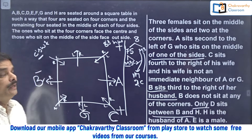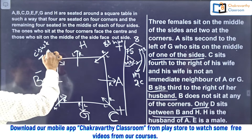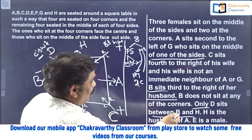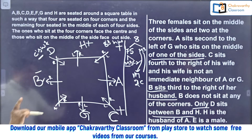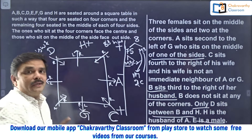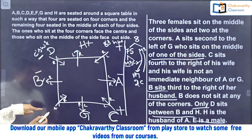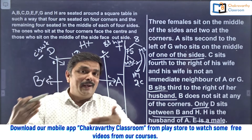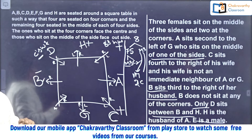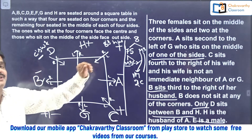Next: 'Only D sits between B and H.' Between B and H there must be D — so I cannot keep H elsewhere; this must be H. Between B and H it should be D. And next, 'H is the husband of A' — so H is male, and A is female. Don't be in a hurry here. Since E is a male and two places are vacant, you cannot directly keep E without thinking — you may end up making a mistake. You should know whether each vacant place is male or female before deciding where to keep E.